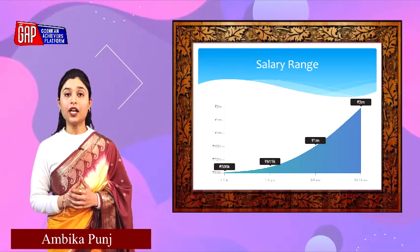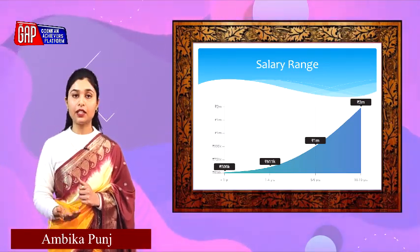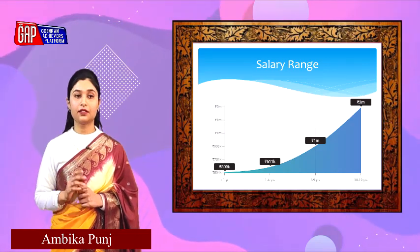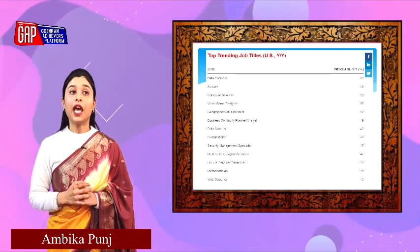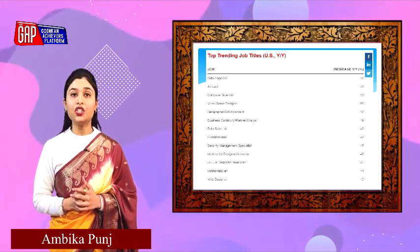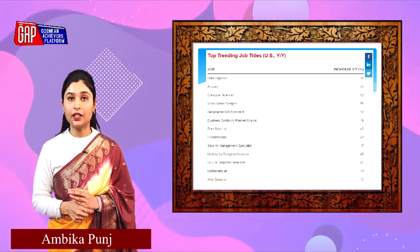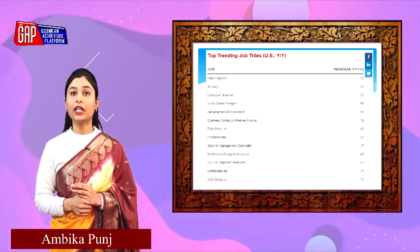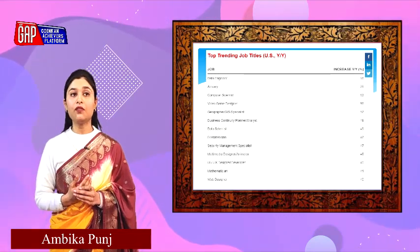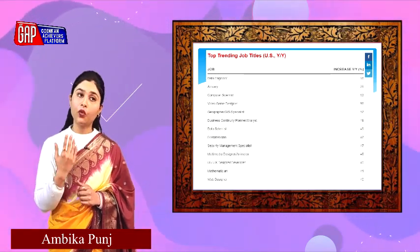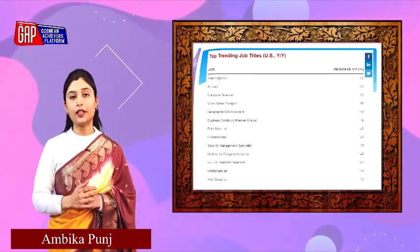A chart shows the years of experience and the corresponding increase in salary. Looking at top trending job titles, data engineer is one of the highest paid careers with a growth of 88% per annum. Thereafter, data scientist, video game designer, and web designer follow — all ranking below data engineer.